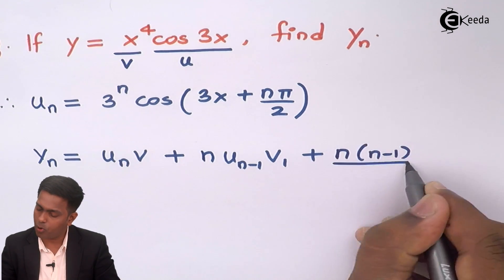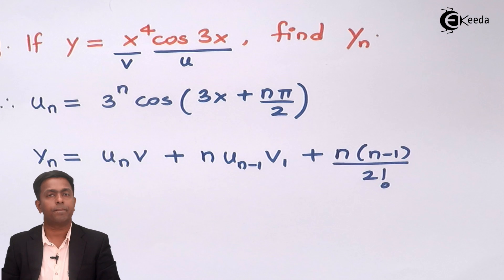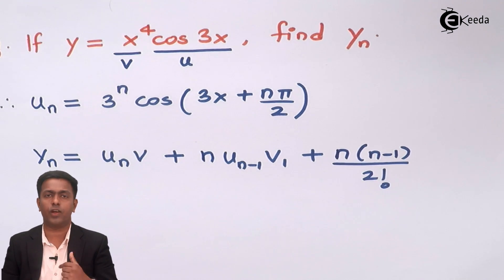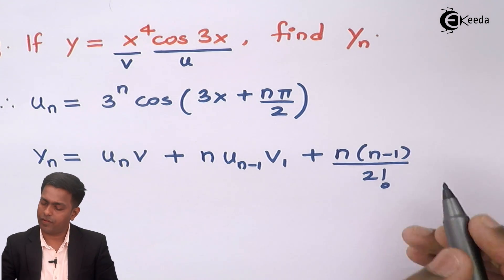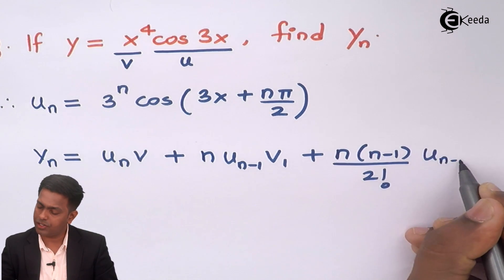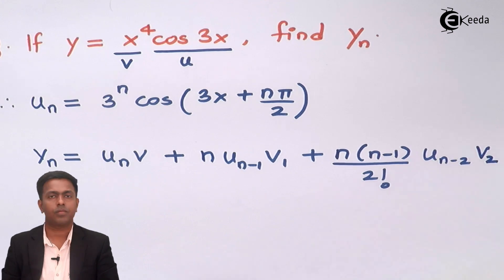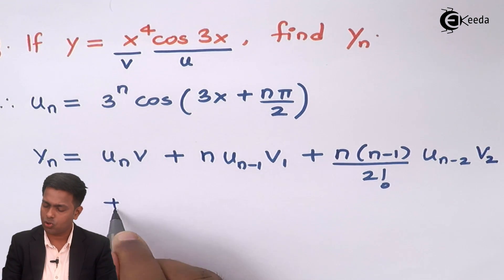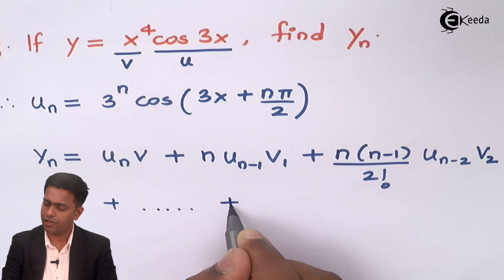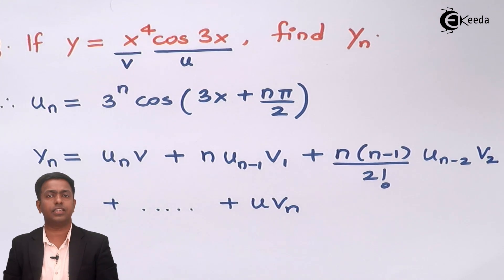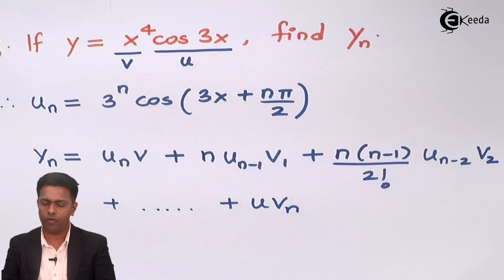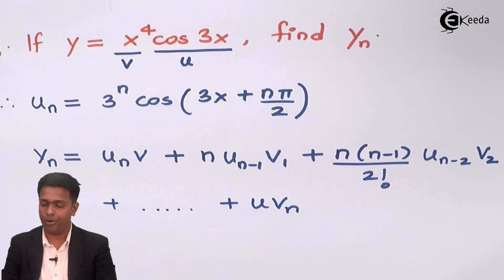Next we have nC2, which is n(n−1) divided by 2 factorial. After that we have u(n−2)·v2, and so on. The last term will be u·vₙ. This is the Leibniz formula for the nth derivative of u times v.